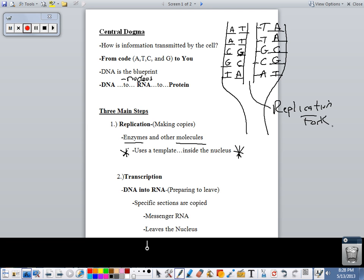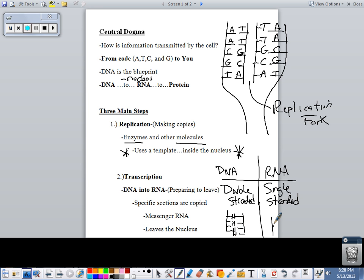In transcription, this occurs in the nucleus. It takes DNA and turns it into RNA. DNA and RNA are very similar. The main differences are DNA is double-stranded, RNA is single-stranded. This is double-stranded, this is single.